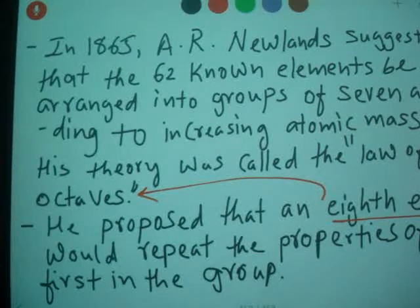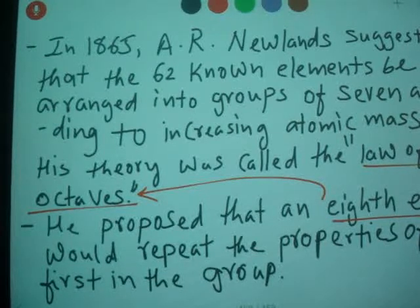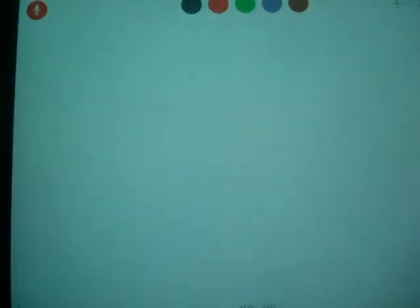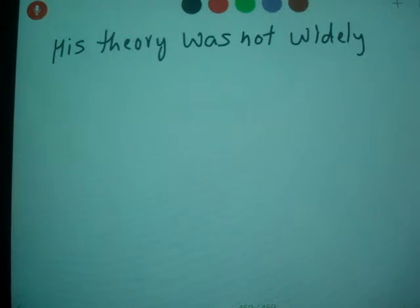Those eighth elements repeat the properties, and that's how he gave the Law of Octaves. His theory was not accepted widely at that time — not widely accepted for about 20 years, even though it was mostly correct.